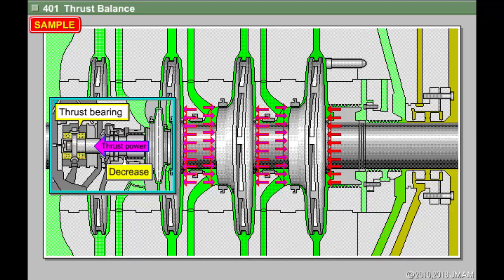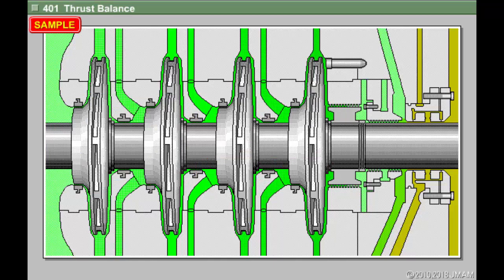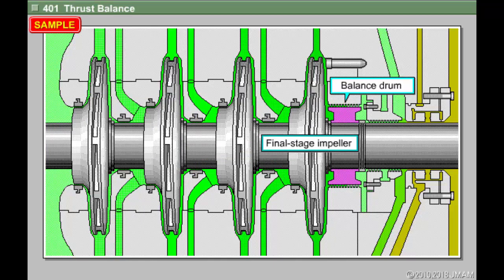This thrust power must be reduced in order to decrease the load on the thrust bearings. For this purpose, a centrifugal compressor uses a balance drum. The balance drum is attached above the shaft behind the final-stage impeller.